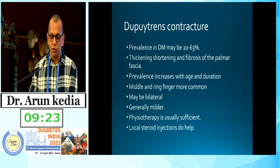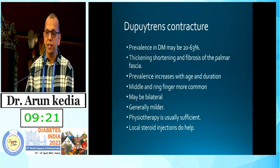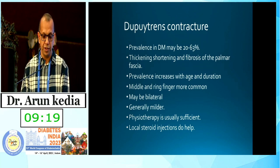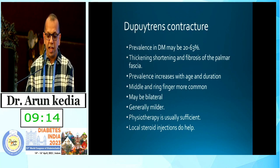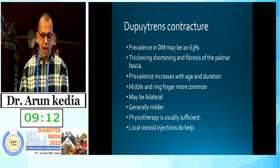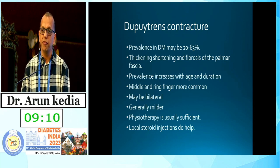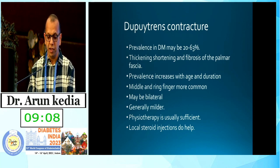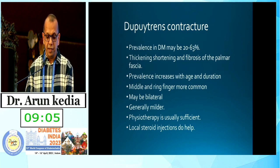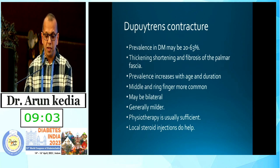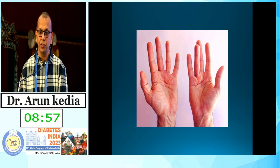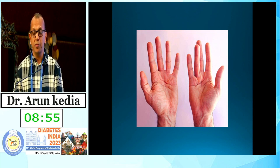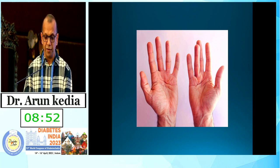Dupuytren's contracture is prevalent in diabetes patients at 20–63%, characterized by thickening, shortening, and fibrosis of the palmar fascia. Prevalence increases with age and duration of diabetes. The most commonly involved fingers are the middle or ring finger, and it may be bilateral. It is generally milder in diabetic patients. Management involves physiotherapy or local steroid injections.